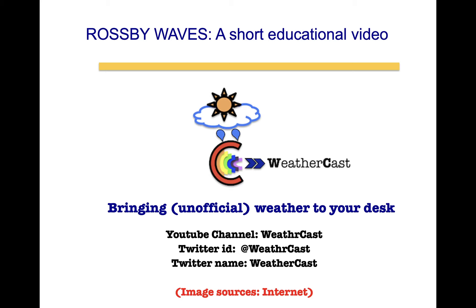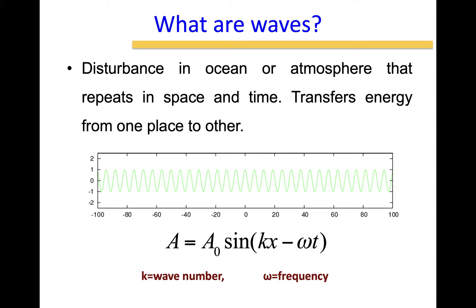Before we get into the specifics of Rossby waves, let us talk about what waves are in general. They are nothing but disturbances in ocean and atmosphere that repeat themselves in space and time, and in that fashion they transfer energy from one place to another on a spatio-temporal scale. This is a typical wave pattern and it could either move towards the right or towards the left, depending on what kind of dispersion relation they have.